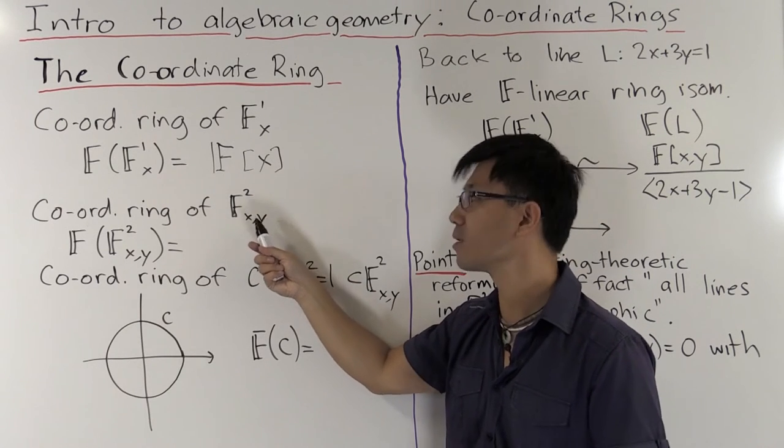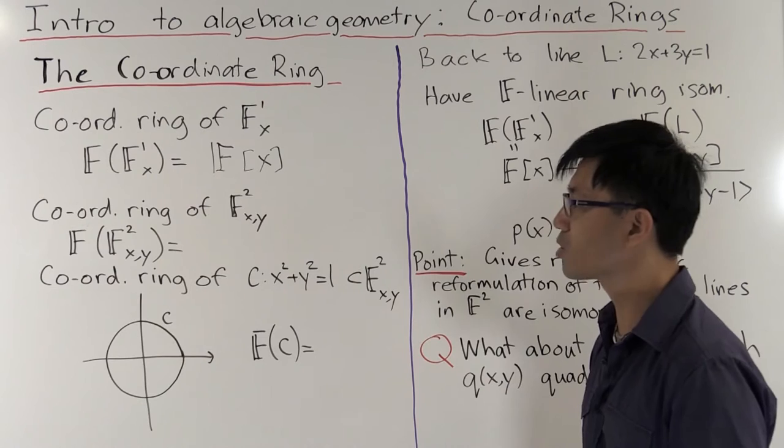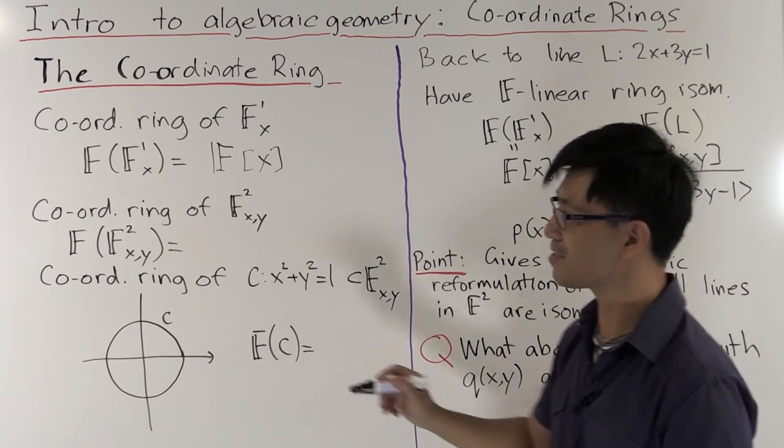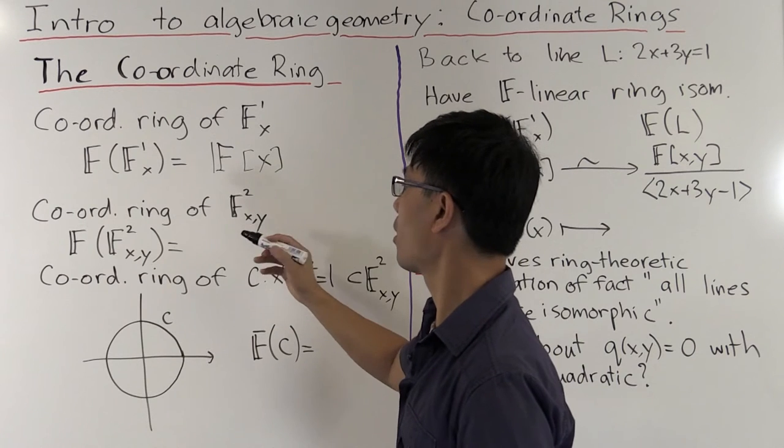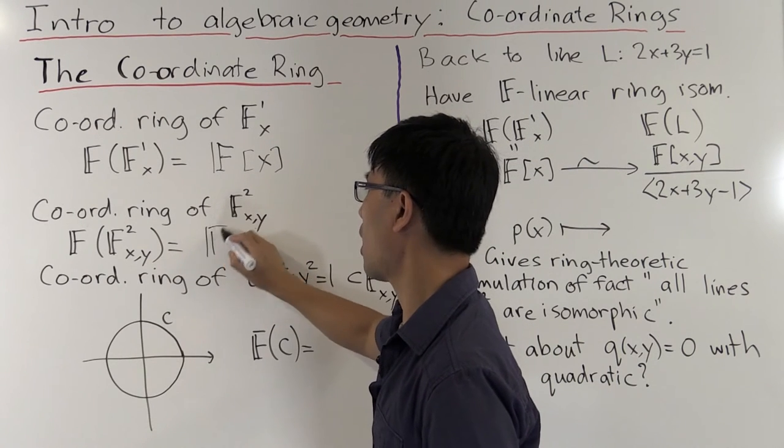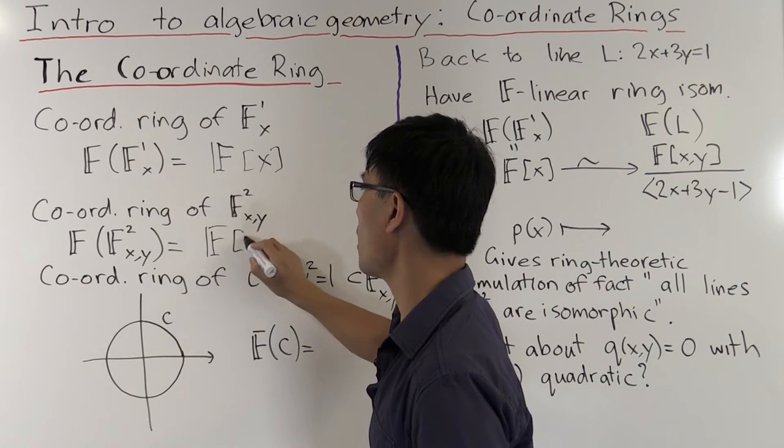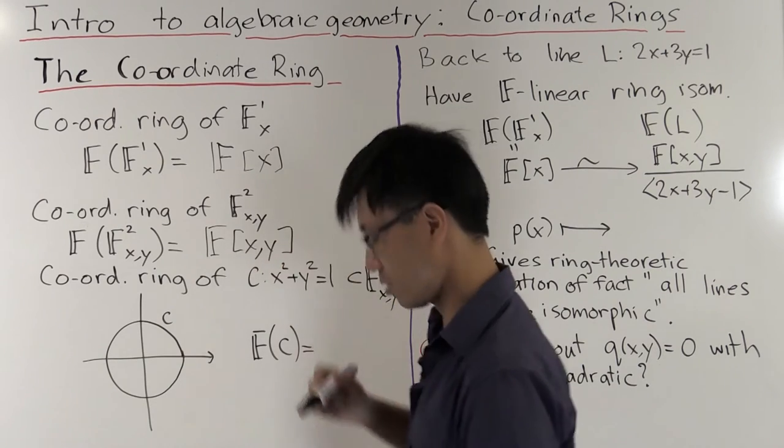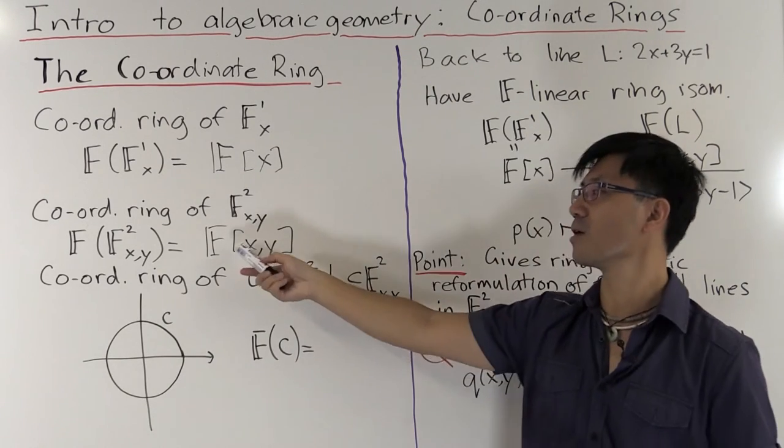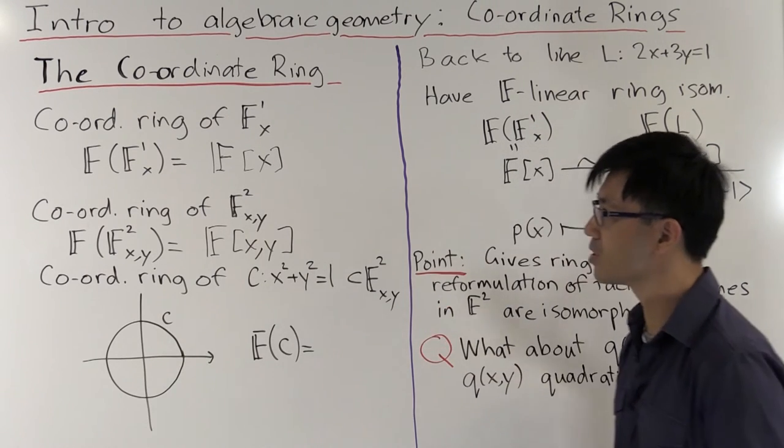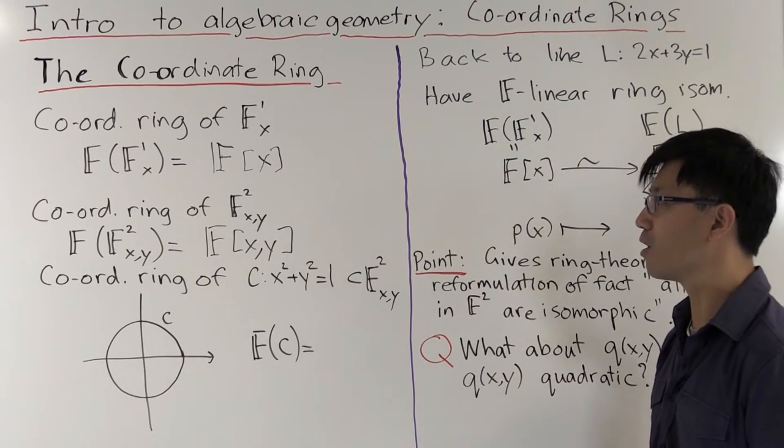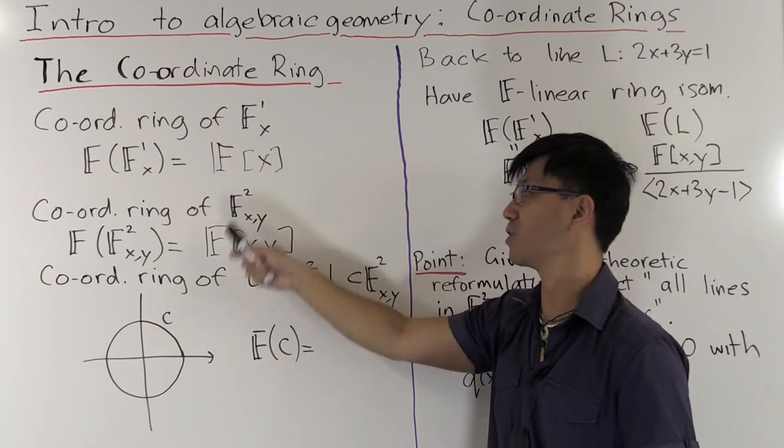Now let's look at the next complicated case, which is the plane, the xy plane here. What's the coordinate ring of that? I hope you can guess. We denote it like this. And the functions that we want are of two variables, x and y. And they're the polynomial functions. So this is the ring of polynomial functions in x and y. And as you can see, they're both rings. And in fact, they're both algebras over this field F.